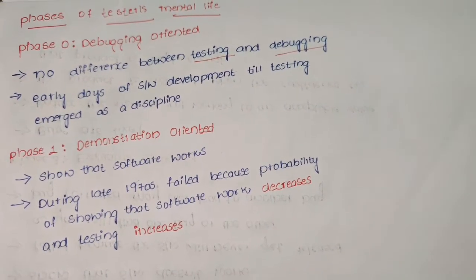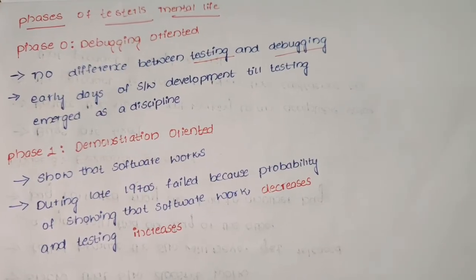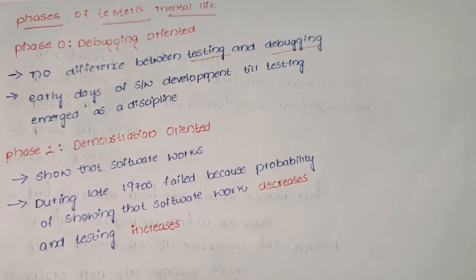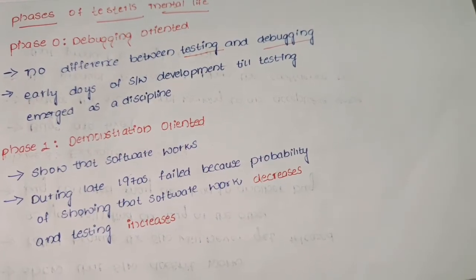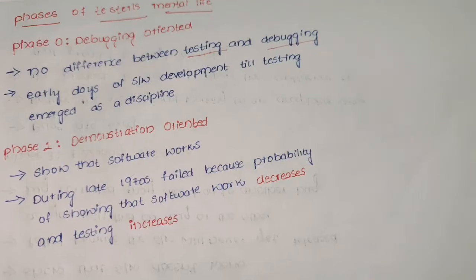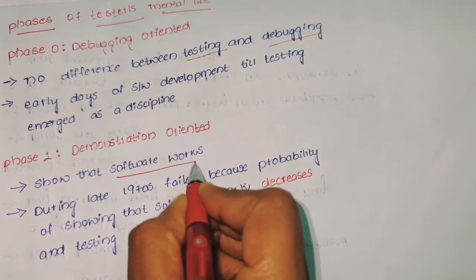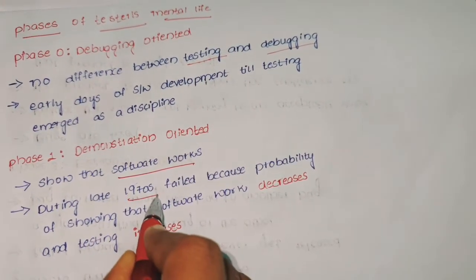Phase 1 demonstration oriented is an agreed form between the contractor authority and the contractor to give necessary assurance that particular requirements have been met. It shows how software works. During late 1990s, it failed because software work decreases and the testing increases.